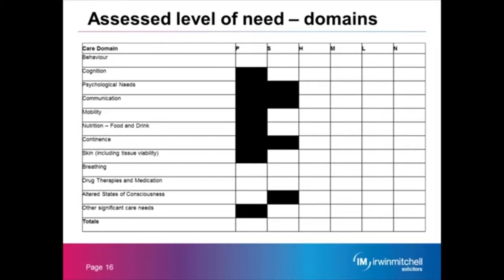In terms of finding out more about these particular areas and the assessment of those — for example, what would constitute a priority need in behaviour — you can do searches online and find copies of the checklist and decision support tool documents that the NHS use, and you can see how the assessments are completed and accompanying guidance notes. When undertaking the assessment, the assessor should speak to the individual, family and friends, observe the care interventions being given, and also review notes of care if available.